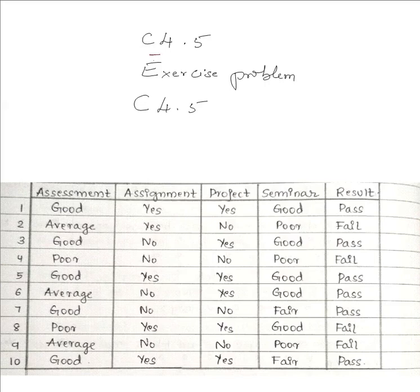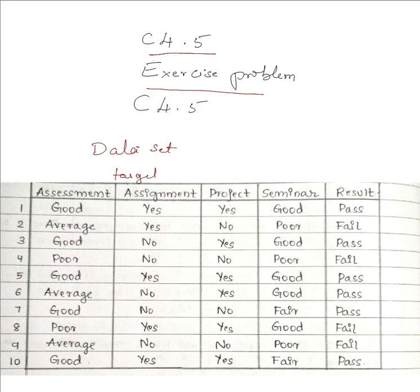Today we are going to discuss the C4.5 exercise problem. It's a very important question. We have a dataset with 10 instances and four independent attributes: assessment, assignment, project, and seminar. Given this dataset, we have to predict whether the student is going to pass or fail. The target variable is the result — we have to predict whether the student belongs to the pass class or the fail class.